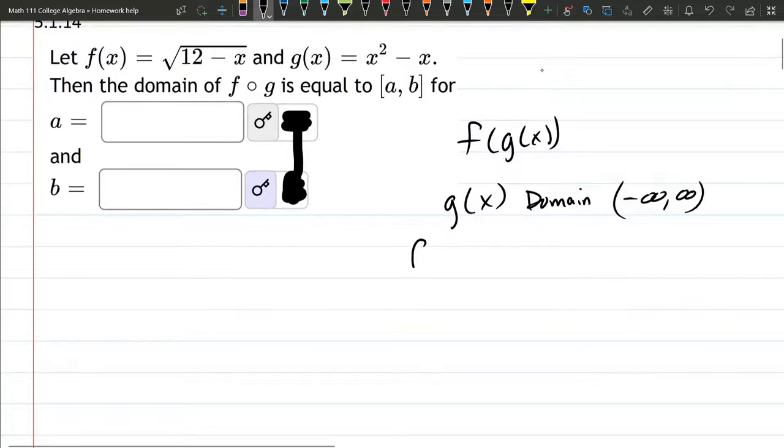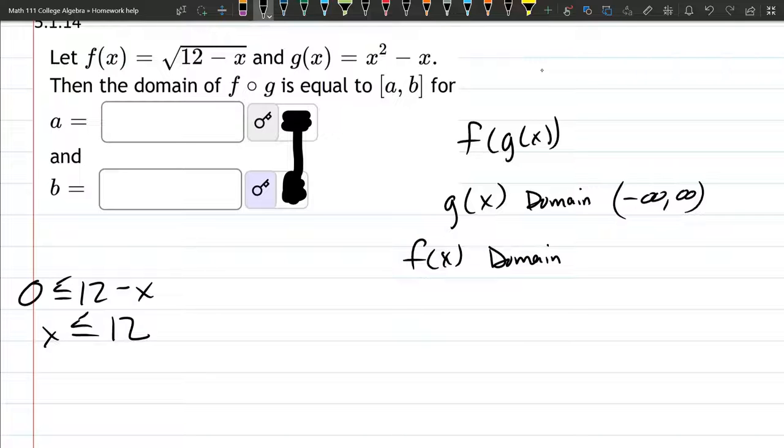f of x, however, is a square root function. So we have to be careful to make sure the input to the square root is zero or more. So I'm going to set 12 minus x to be greater than or equal to zero. Solving for x is pretty easy. Add x to both sides. x is less than or equal to 12.